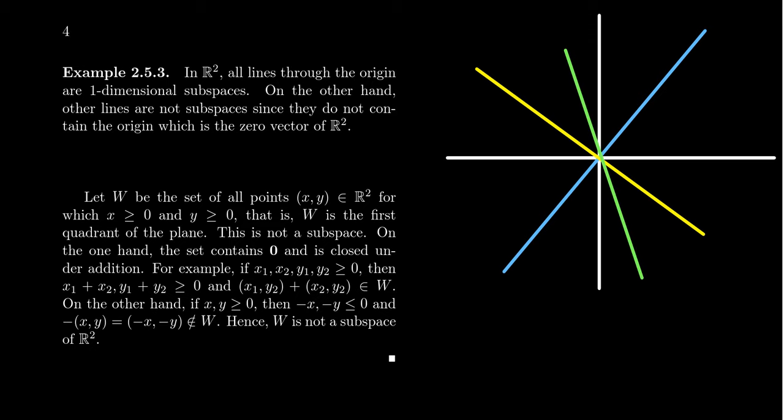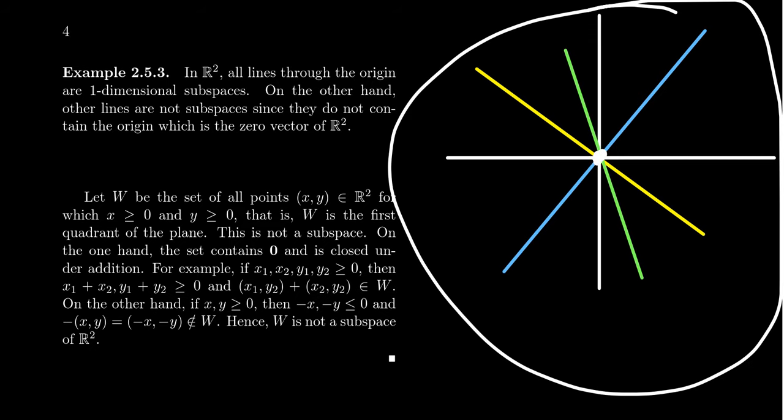I should mention, of course, that the origin itself does form a subspace. It would be what we call zero-dimensional. It's just a point. And, of course, the whole plane also forms a subspace. Somewhat improper because it's everything. But every vector space is a subspace of itself, technically speaking, the way we've defined it.